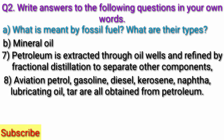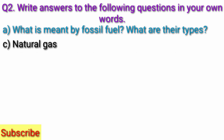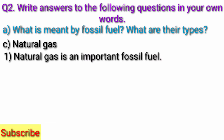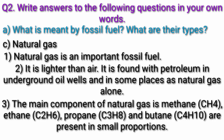Aviation petrol, gasoline, diesel, kerosene, naphtha, lubricating oil, and tar are all obtained from petroleum. They are used as fuel and for production of dyes, pesticides, perfumes, and artificial fibers. Natural gas is an important fossil fuel. It is lighter than air. It is found with petroleum in underground oil wells and in some places as natural gas alone. The main component of natural gas is methane; ethane, propane, and butane are present in small proportions.